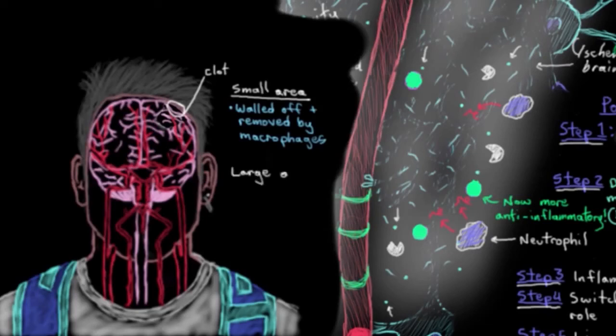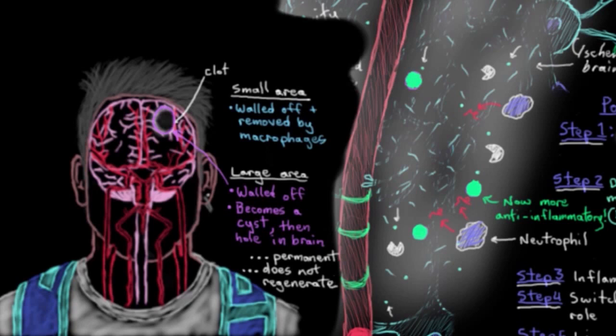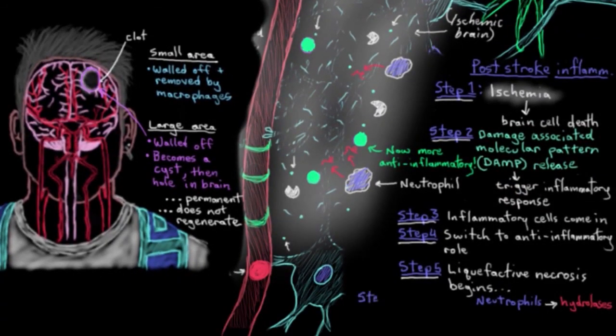But if you have a larger necrotic area, so let's say if you had a large stroke, then the area of necrosis gets walled off again. It gets quarantined, if you will, from the rest of the brain. And it will become a cyst, which is a cavity that's separated from the surrounding tissue. And then the cyst gets cleaned up by immune system cells and just becomes a large cavity, actually just a hole in the brain that unfortunately is permanent and doesn't regenerate back into functional brain. So there's literally a hole that ends up staying in your brain. So just for completeness's sake, step six, cavity formation.